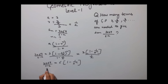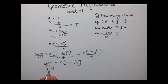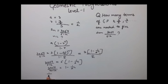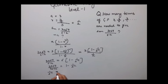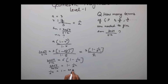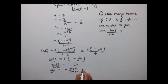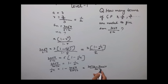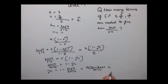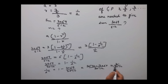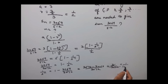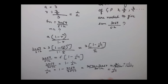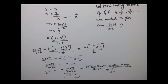Dividing both sides: 3069/3072 = 1 - 1/2ⁿ, which rearranges to 1/2ⁿ = 1 - 3069/3072 = 3/3072 = 1/1024. Since 1/1024 = 1/2¹⁰, we get 2ⁿ = 2¹⁰, so n = 10.